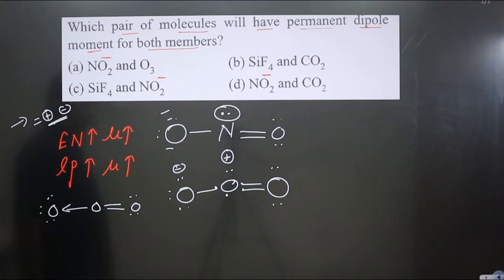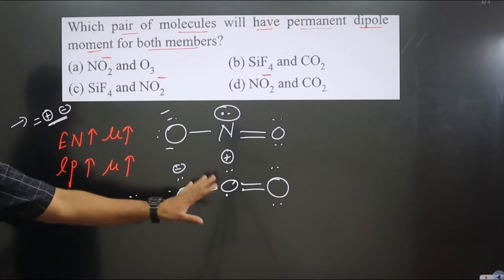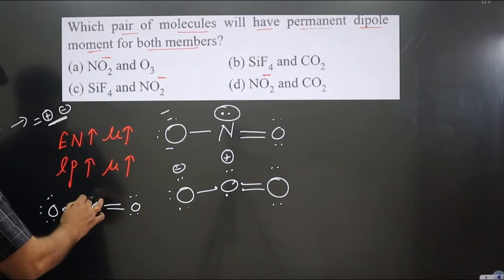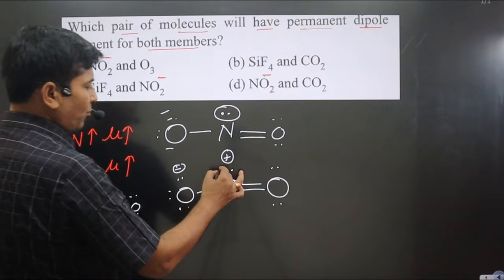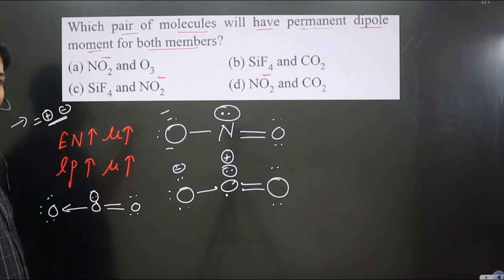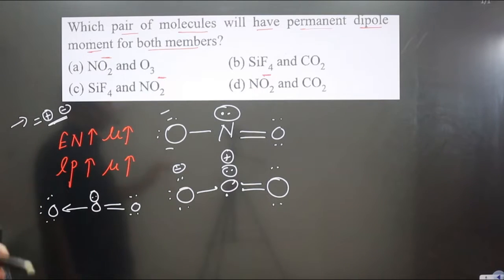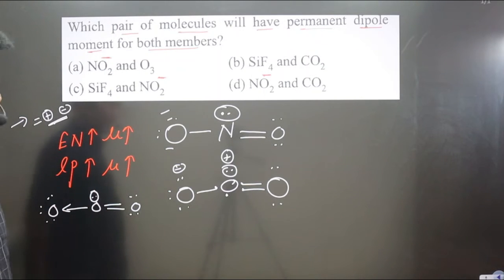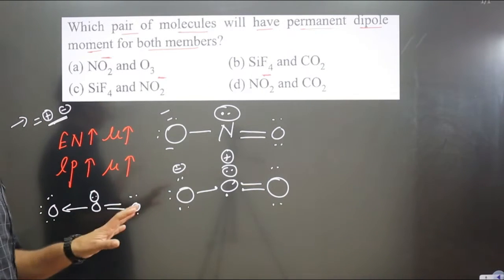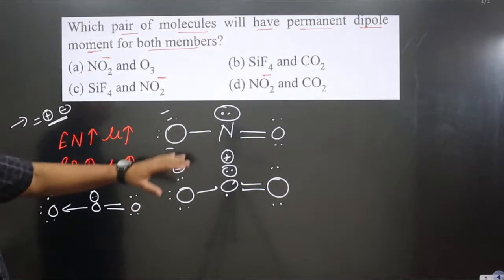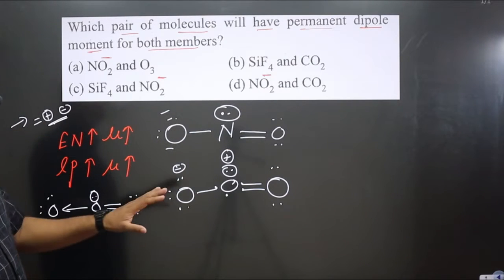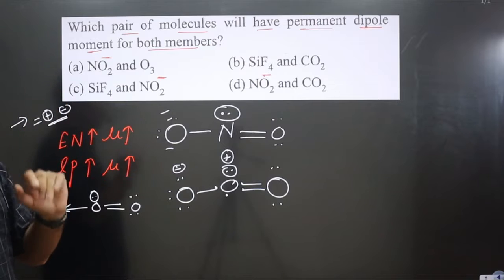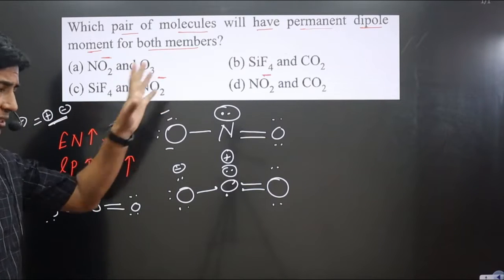This coordinate bond structure is also valid. In this structure, the central oxygen has one lone pair, and since lone pairs are present, the dipole moment will never be zero — it will always be non-zero. Some polarity will definitely be there. So both NO₂⁻ and O₃ have a permanent dipole moment, and we get the answer in the first option itself.